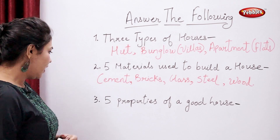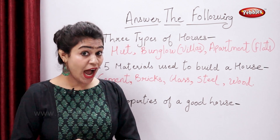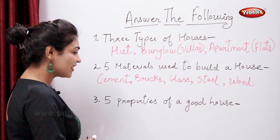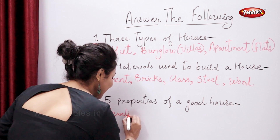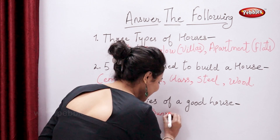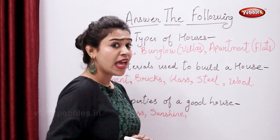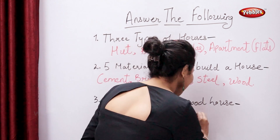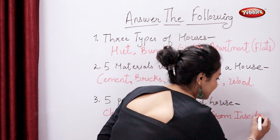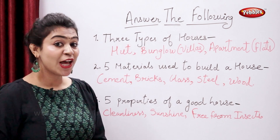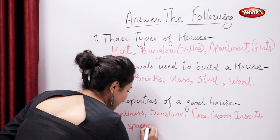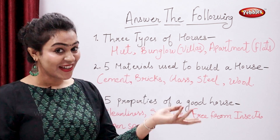Perfect. So now tell me five properties of a good house. Tell me. Yes, right. The first property is cleanliness, and sunshine, and free from insects, and open spaces, and the last property, fresh air. Correct.